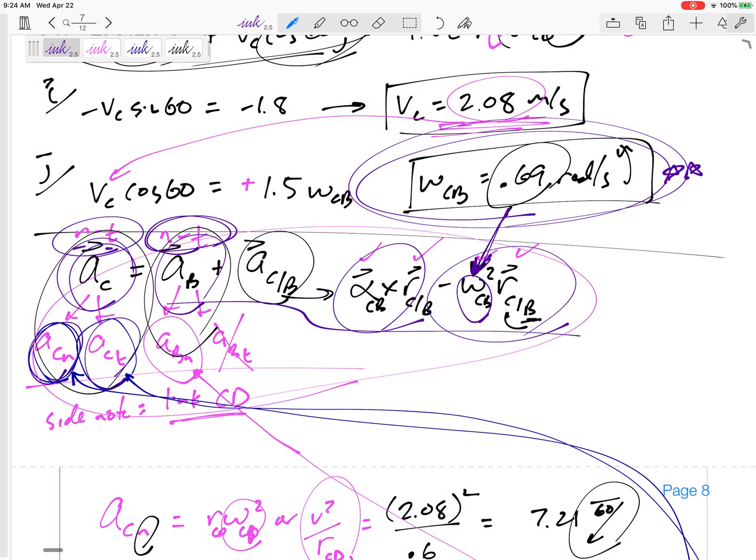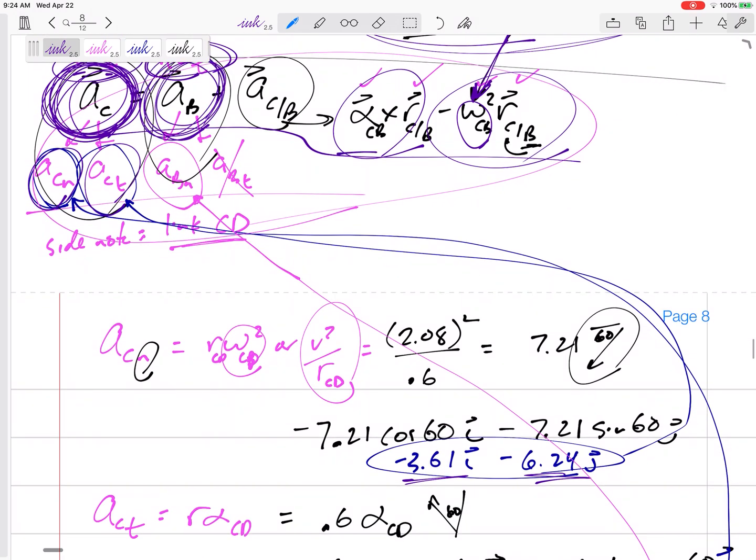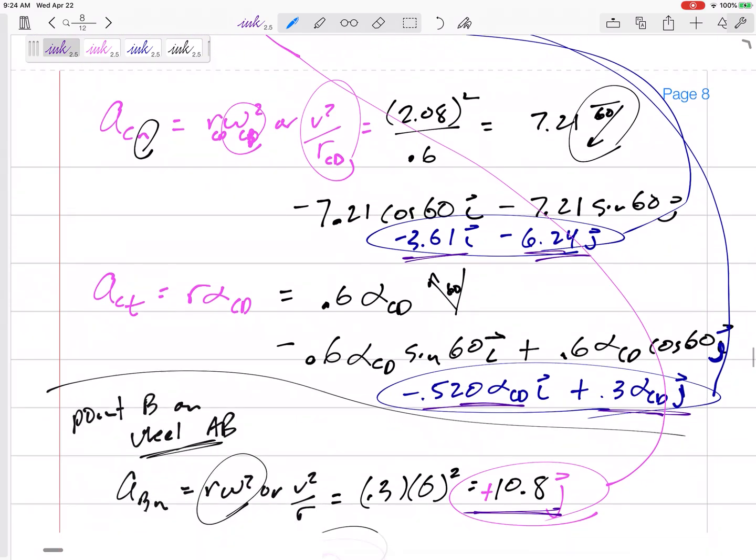But you can write that equation and then just start breaking this down into small problems. Here's a small problem in itself. Hey, what is the acceleration of C? Right here. Then you can start plugging it in. Alpha cross, so this is plus alpha cross r and minus omega squared times r right there.